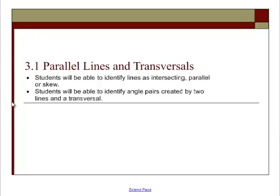As we begin chapter 3, we're going to start talking about parallel lines and transversals and essentially just multiple lines crossing one another and the angle pairs that those create.